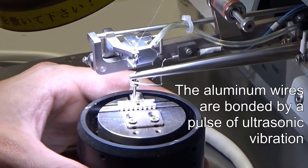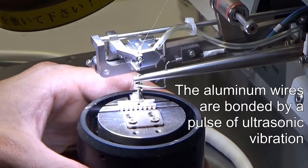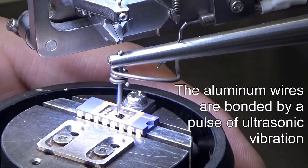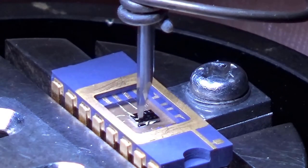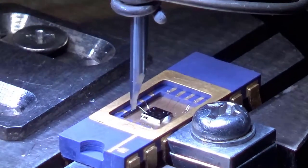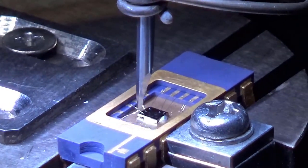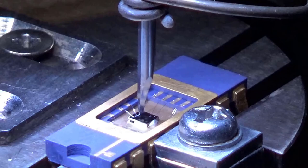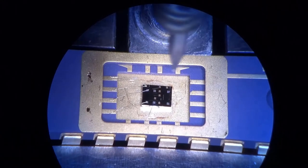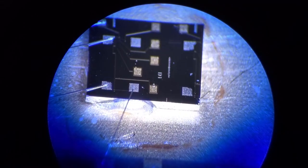These connections are made by a thin aluminum wire, which is bonded by an ultrasonic pulse. We manually align each wire by the aid of a microscope.